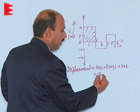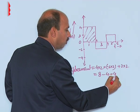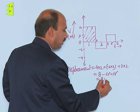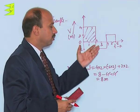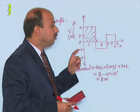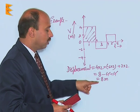This will be coming here, 8 minus 4 plus 4, that is equal to 8 meter. So this is the displacement. Displacement in time 6 seconds is equal to 8 meter.